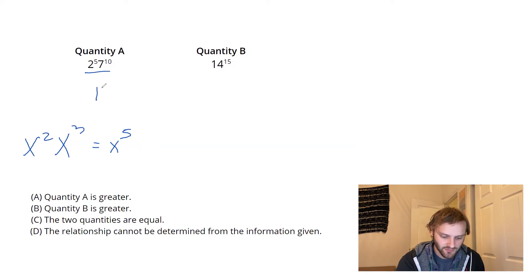and say, well, 2 times 7 is 14. 5 plus 10, add those exponents, is 15. And boom, it looks just like quantity B. But is that correct?